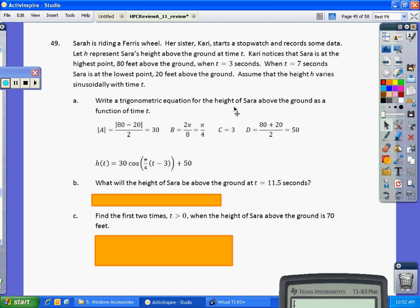The period, I know that it takes 4 seconds to go from a high point to a low point. 4 seconds would represent half the period. So 8 seconds would be the period. So B is going to equal 2π over 8, which reduces to π over 4. Because the first high point occurs at T equals 3 seconds, our phase shift is going to be 3. And the vertical shift is max plus min divided by 2, so 80 plus 20 divided by 2 is 50.